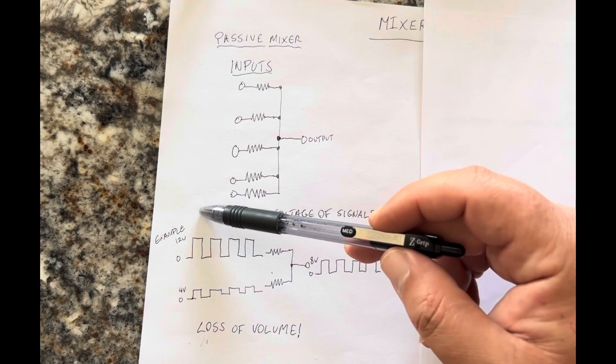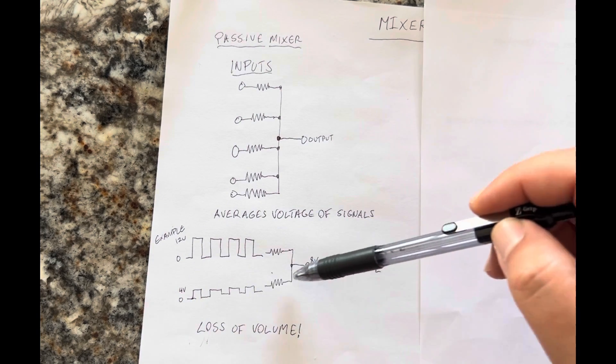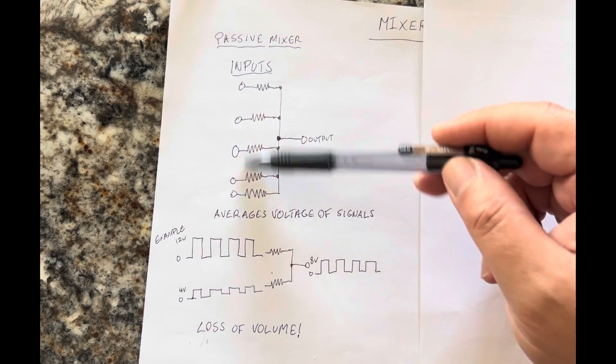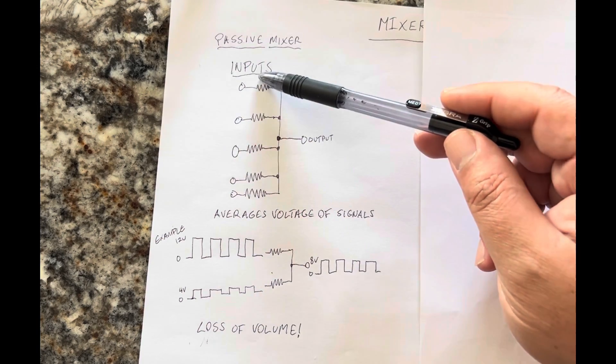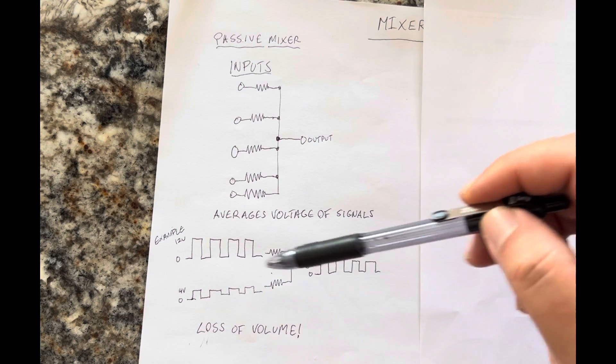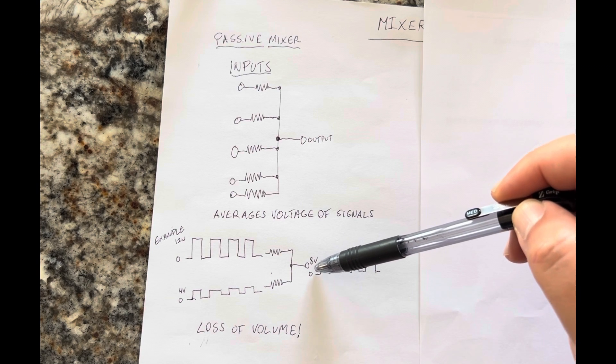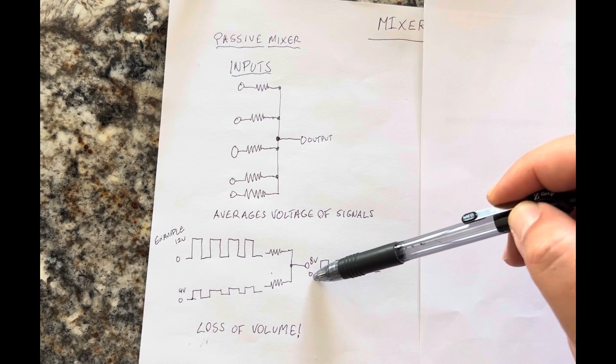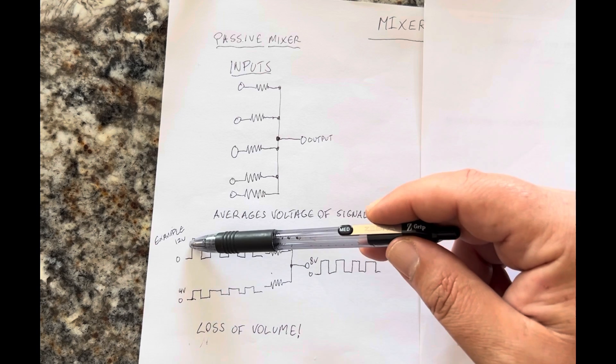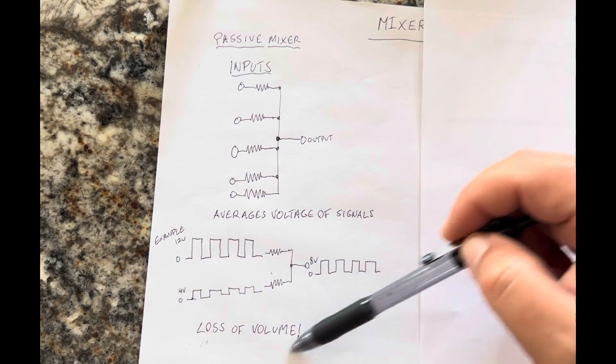So if you have an example something like this, where you have a 12-volt signal and a 4-volt signal, and you put those through resistors, I put all the resistors at the same value so I didn't put a value here, but typically people use 50 to 100K resistors for these. And the output of this, when put through this passive mixer circuit, is a maximum peak-to-peak of 0 to 8 volts, even though one of the signals is 4 volts and one of the signals is 12 volts. So there's a loss of volume using a passive mixer circuit.